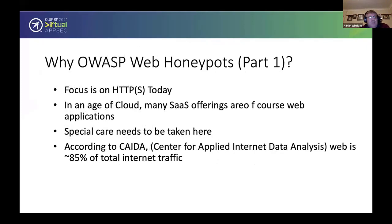So the first question I pose is: why OWASP web honeypots? A lot of what we're talking about for AppSec USA today is around web applications and secure HTTP. Web still accounts for about 85% of total internet traffic according to organisations like CAIDA, the Centre for Applied Internet Data Analysis. So a lot of what you want from threat intelligence is going to be web-related.